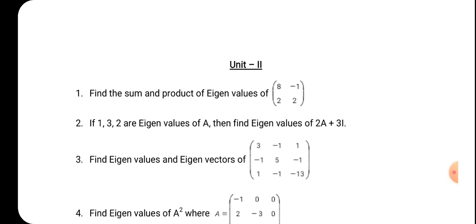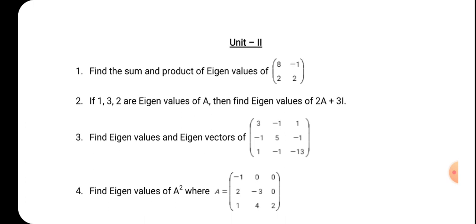You just go through the problems; definitely you can expect similar types of problems in the final examination papers. The first one: find the sum and product of Eigenvalues of a square matrix. A 2 by 2 matrix is given — just calculate the Eigenvalues so that you can directly find its sum and product.